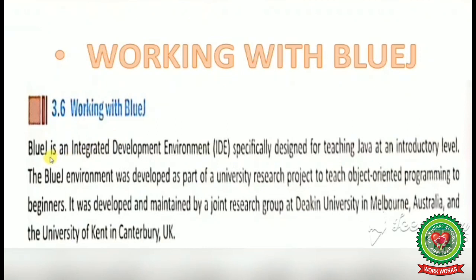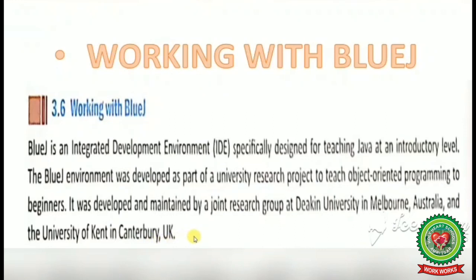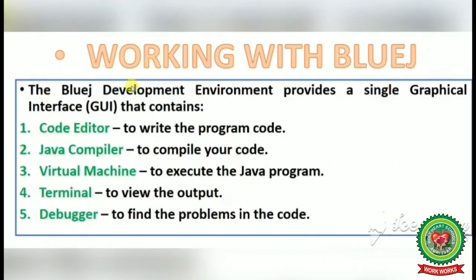The BlueJ environment was developed as part of a university research project to teach object-oriented programming to beginners — users who are new to Java programming. It was developed and maintained by a joint research group at Deakin University in Melbourne, Australia, and the University of Kent in Canterbury, UK.